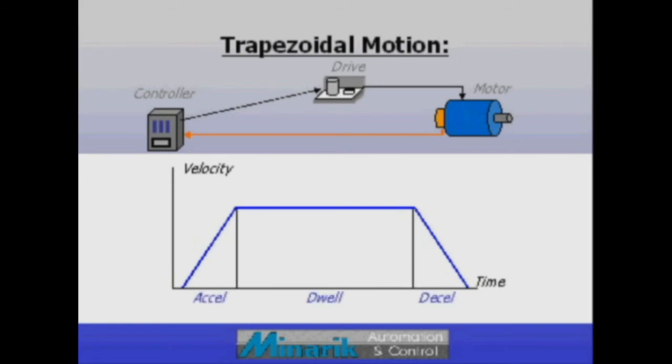It has three segments: accel, dwell, and decel. The acceleration and deceleration follow linear rates while the dwell represents a time moving at a constant speed.